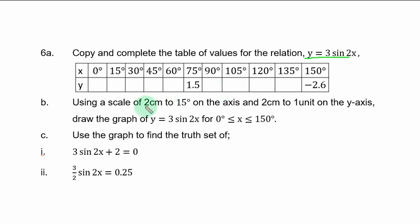Part B: using a scale of 2cm to 15° on the x-axis and 2cm to 1 unit on the y-axis, draw the graph of y = 3sin2x for 0° ≤ x ≤ 150°. Part C: Use the graph to find the truth set of (i) 3sin2x + 2 = 0, (ii) 3/2 sin2x = 0.25.